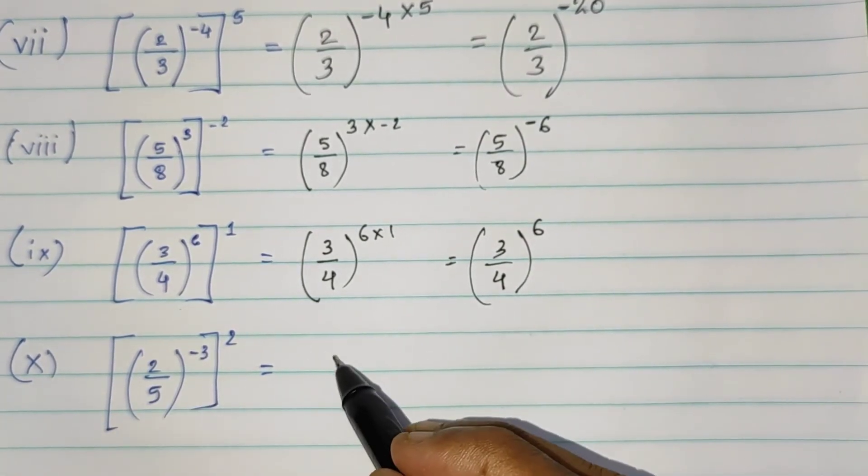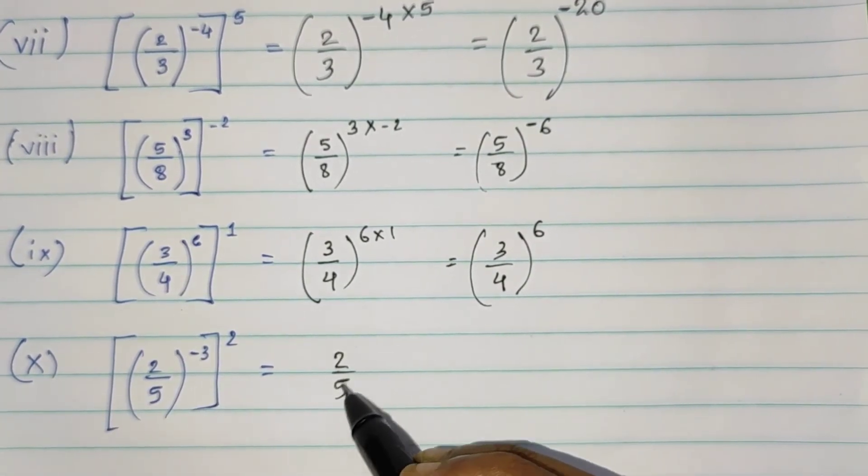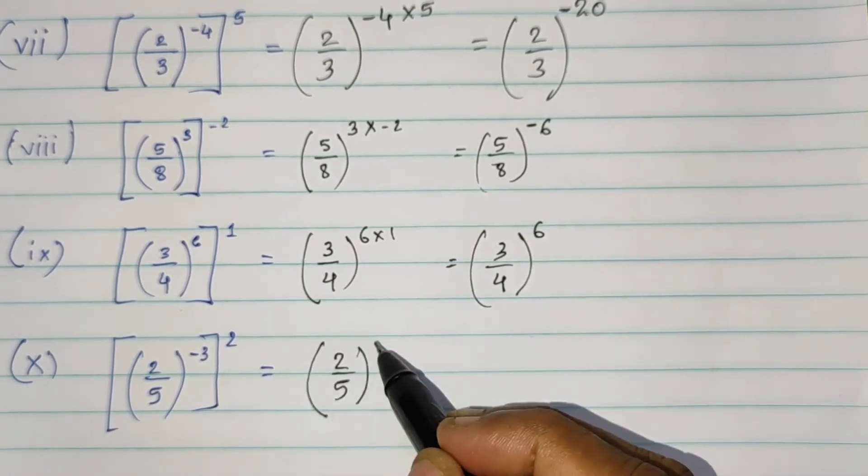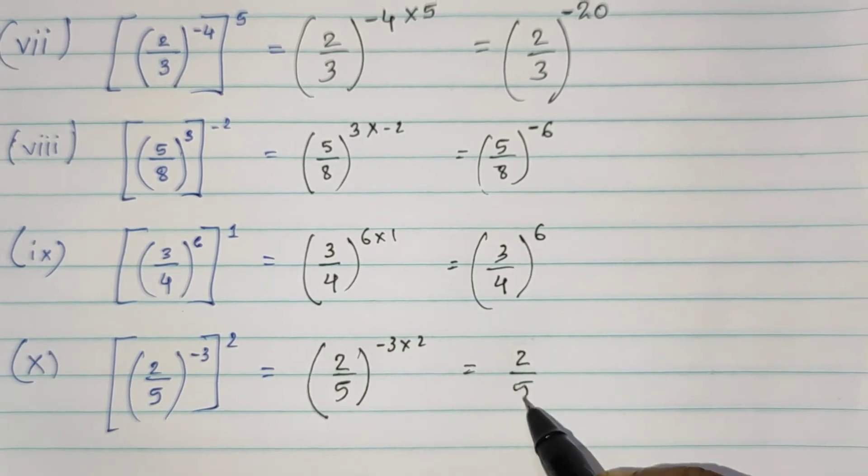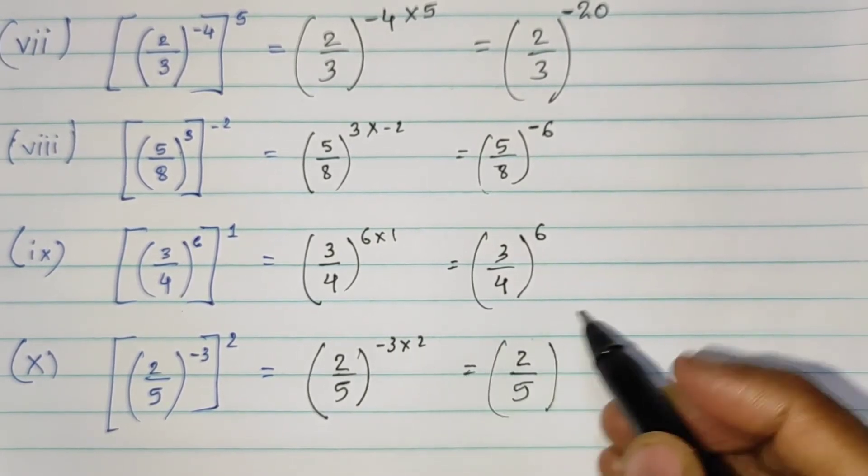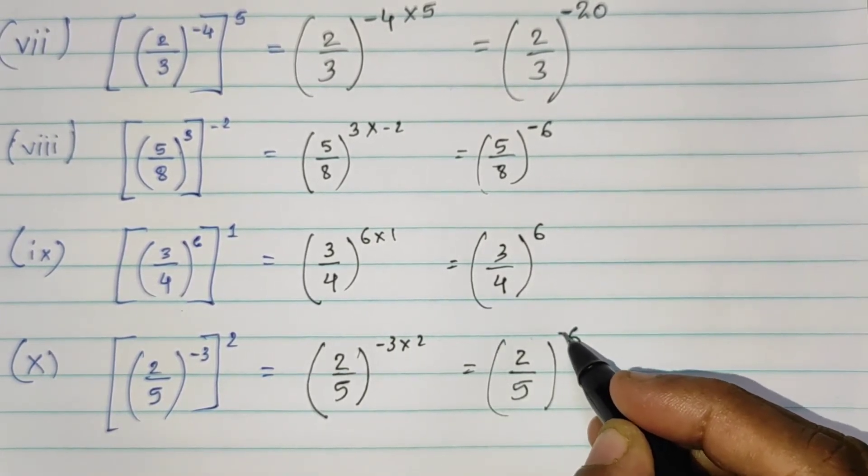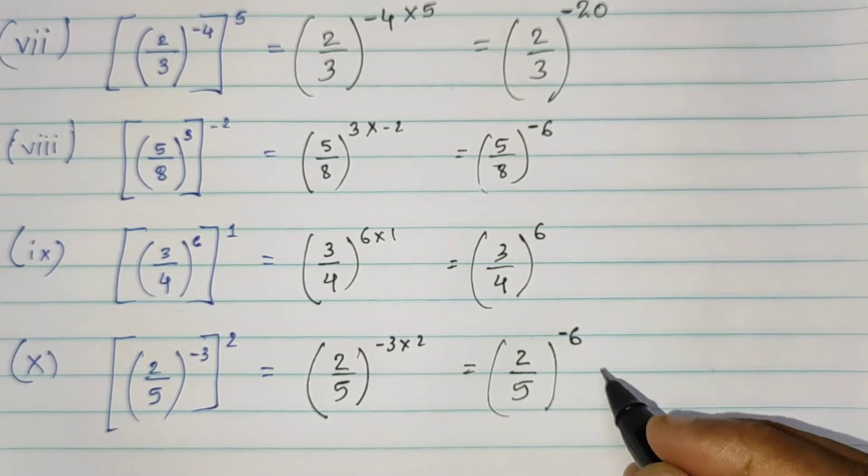Then, the last one. 2 upon 5 the whole raised to minus 3 into 2. So 2 upon 5 the whole raised to 3 times 2 is 6, minus 6. Okay.